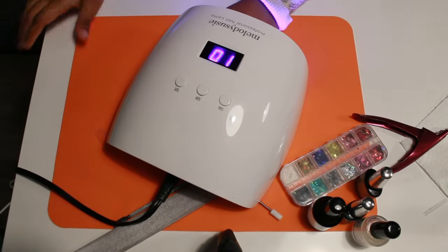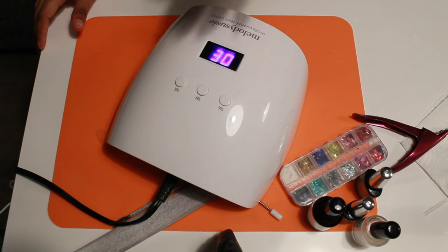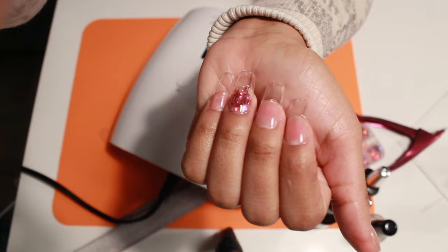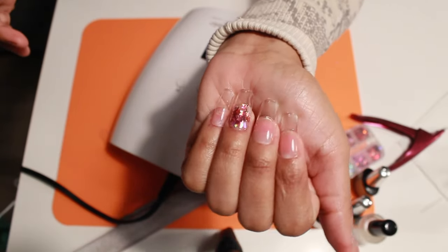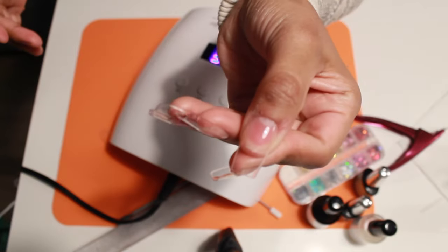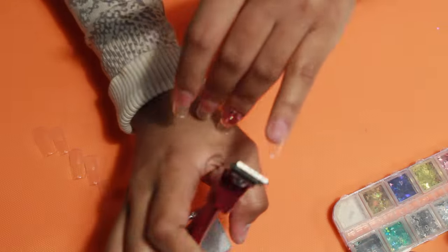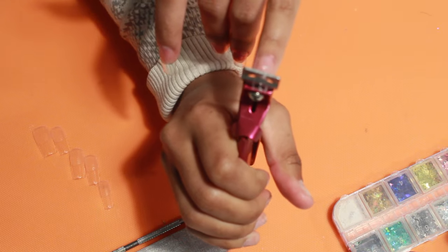Once I have all of my nails done and applied, I do stick it in my Melody Susie lamp for 60 seconds just to assure that everything is stuck on there properly. And then I do cut my tips down to my desired length.